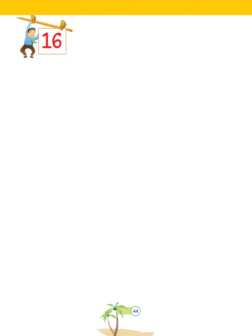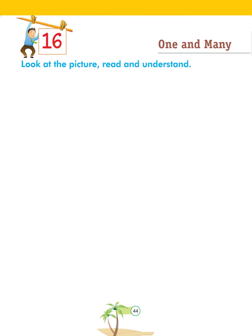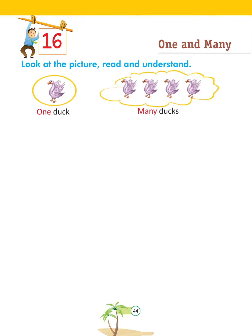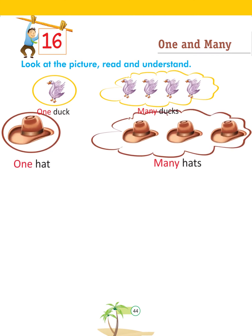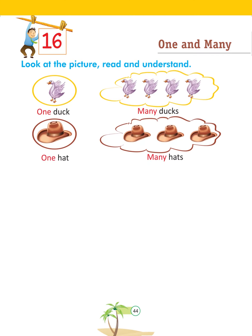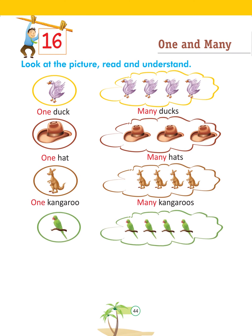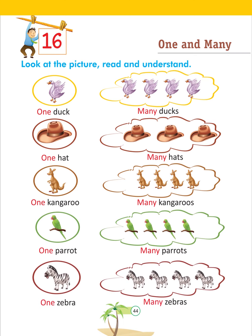Chapter 16: One and Many. Look at the picture, read and understand: One duck — many ducks. One hat — many hats. One kangaroo — many kangaroos. One parrot — many parrots. One zebra — many zebras.